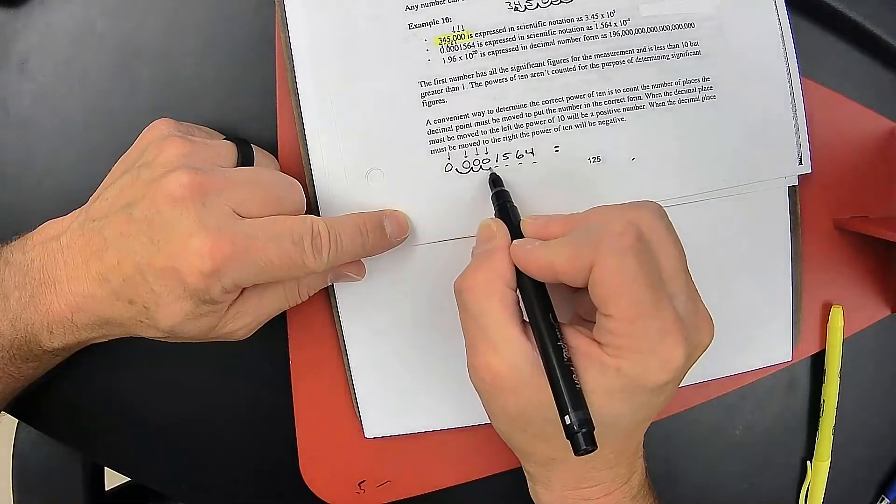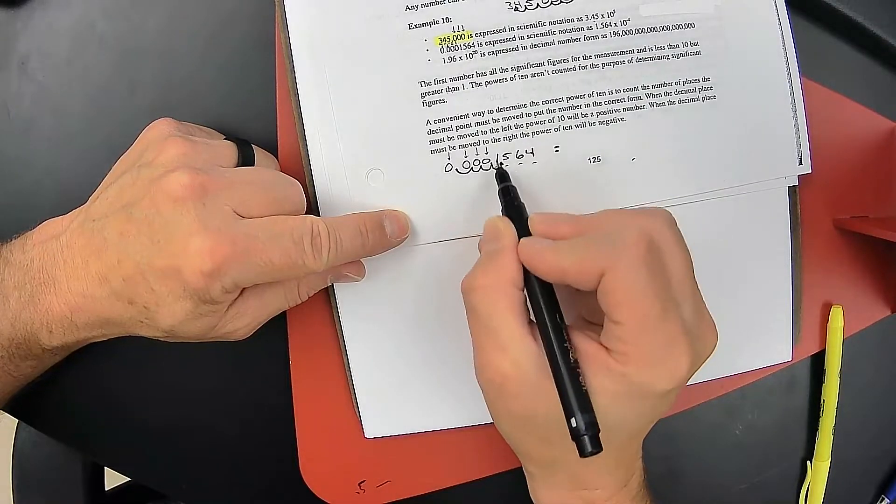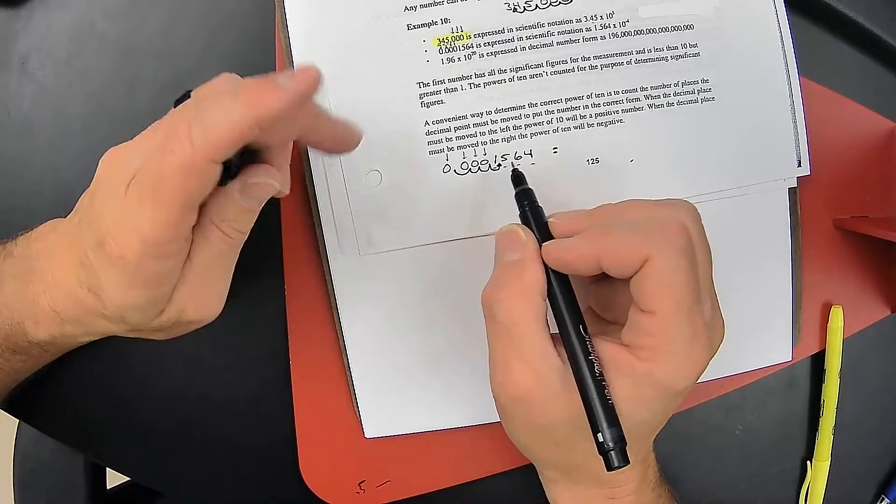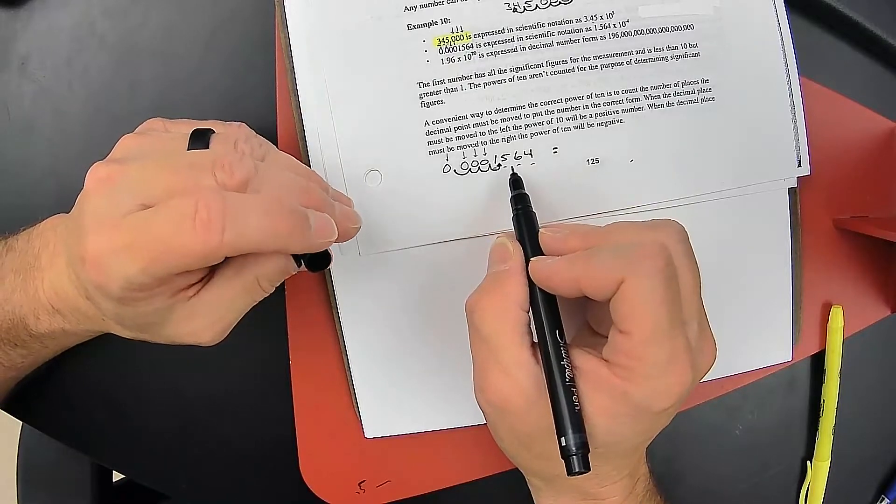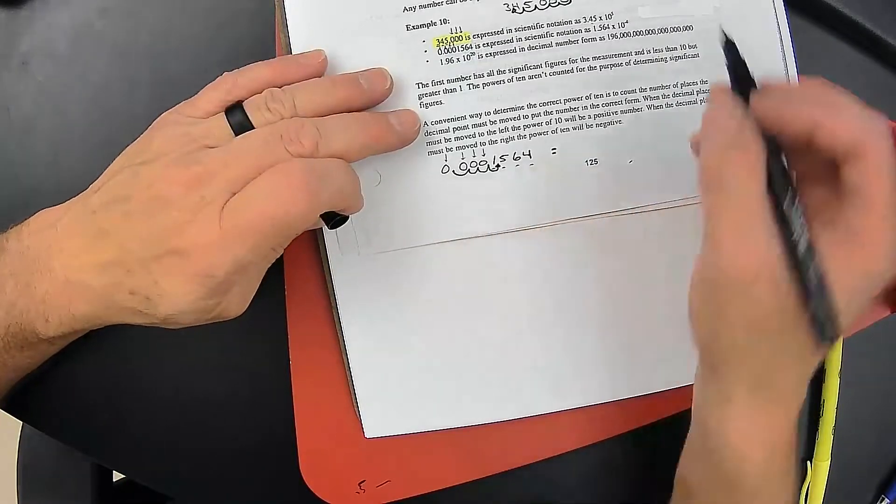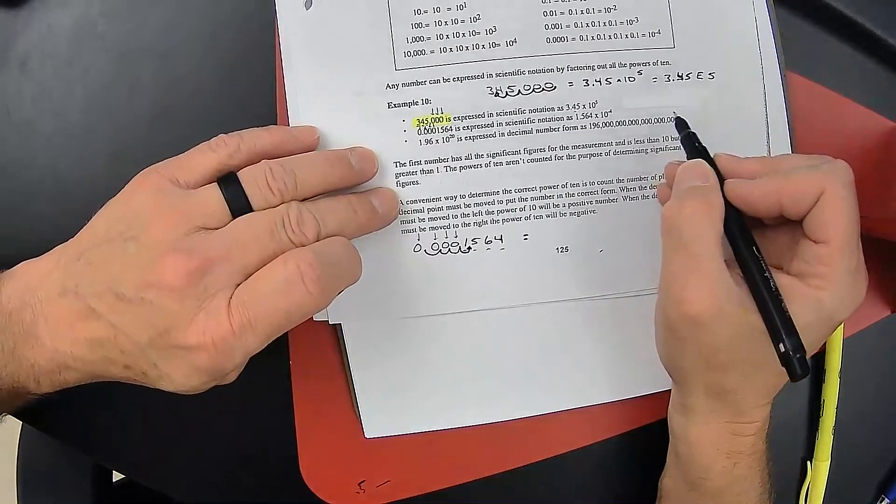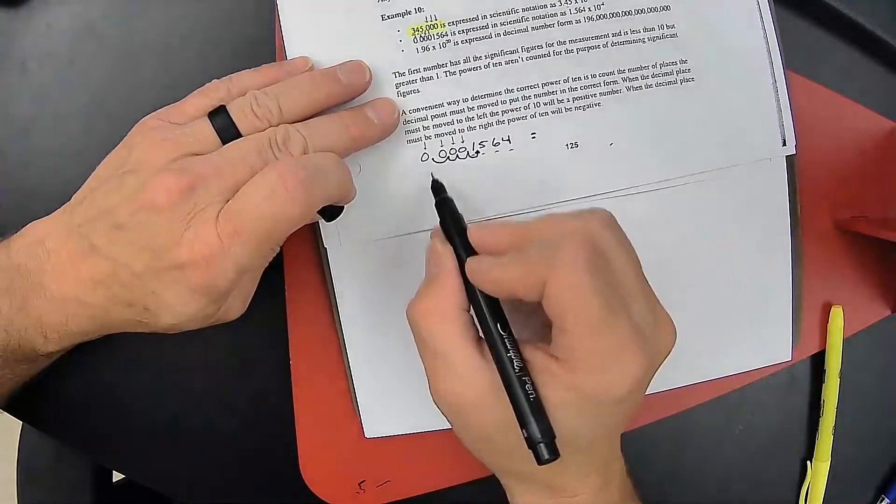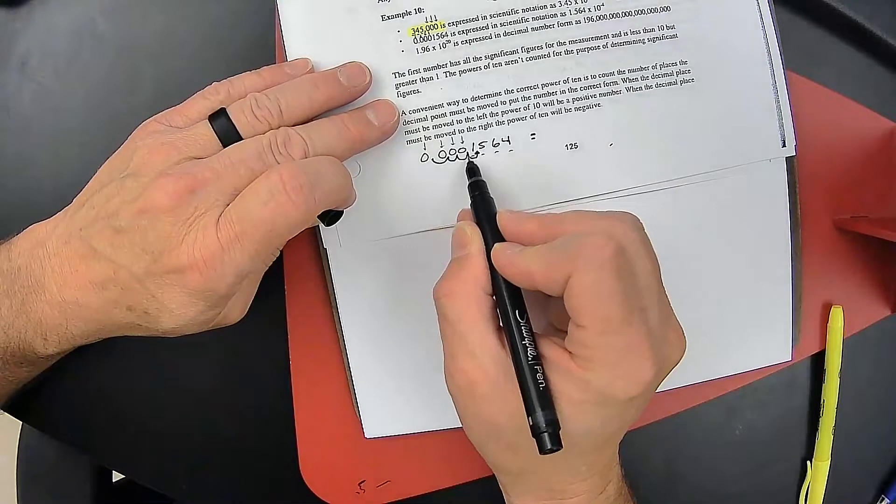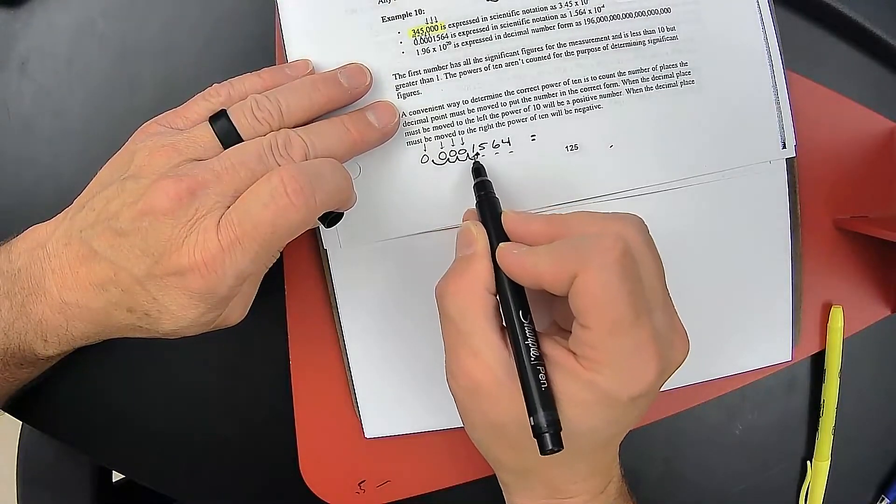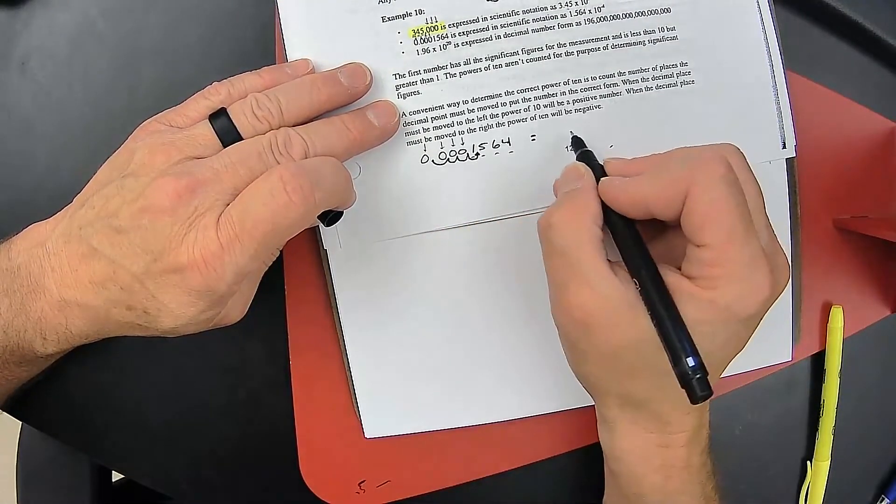I'm moving it one, two, three, four places. When we put numbers into scientific notation, we always end up with one non-zero digit to the left of the decimal. So I move the decimal so that we end up with one non-zero digit to the left of the decimal.